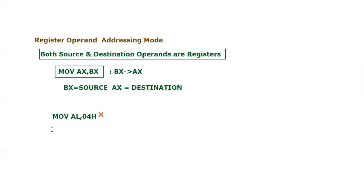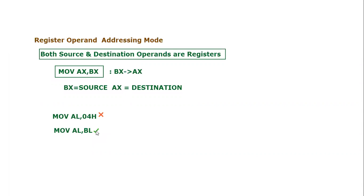Now let's take another example: MOV AL, BL. Is it register operand addressing mode? Yes, because this instruction uses both operands — the source operand BL and the destination operand AL — both of which are registers. So this instruction is using register operand addressing mode.